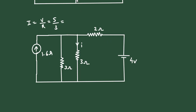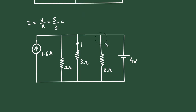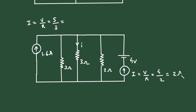Similarly, when converting this voltage source to a current source, this 2 Ohm resistor will be in parallel, so it will be 2 Ohm. We can convert this voltage source into its equivalent current source, and the direction will be according to the polarity — upward, because positive is here and negative is here. I is equal to V divided by R: voltage value is 4 and resistance is 2, so it will be 2 Ampere. We can erase this voltage source now.